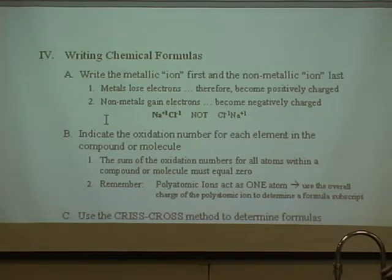Let's go over how to write a chemical formula. The first thing written is always the metallic cation, and then you write the non-metallic anion. Here's the example: Na+1 Cl-1. You don't write it with Cl minus first.